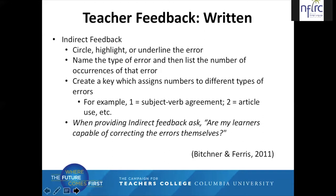In indirect feedback, teachers circle, highlight, or underline the error. They name the type of error and list the number of occurrences. Another possibility is that teachers may create a key which assigns numbers to different types of errors. For example, we may identify a subject-verb agreement error in a learner's assignment and just write a number one next to it, and the learners know what this means because we've given them a key. When providing indirect feedback, we need to ask: are my learners capable of correcting the errors themselves?